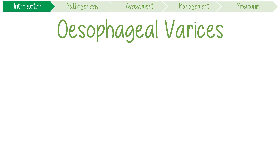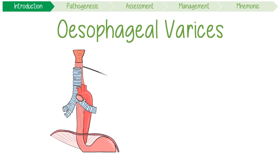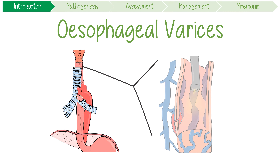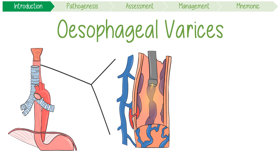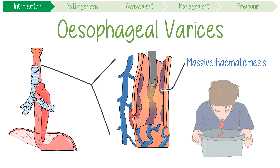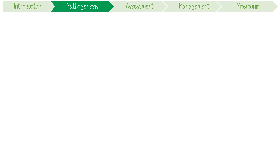Esophageal varices are enlarged submucosal veins that can develop in patients with portal hypertension. They cause life-threatening esophageal bleeding, presenting in the form of massive hematemesis. I love teaching this topic because I've got a great way to remember it all. But first, let's just recap its pathophysiology.